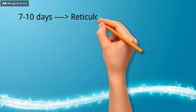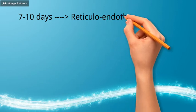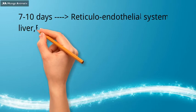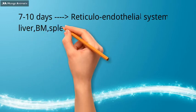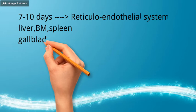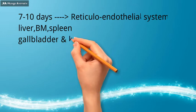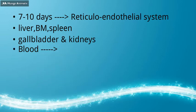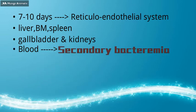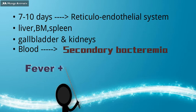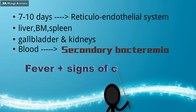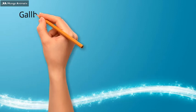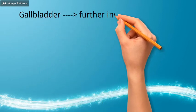After primary bacteremia, the bacilli enter the reticuloendothelial system, including the liver, spleen, and bone marrow, as well as the gallbladder and kidneys. After multiplication in these organs, the bacilli pass back into the blood, causing a secondary massive bacteremia. This coincides with fever and other signs of clinical illness. From the gallbladder, further invasion of the intestine results.